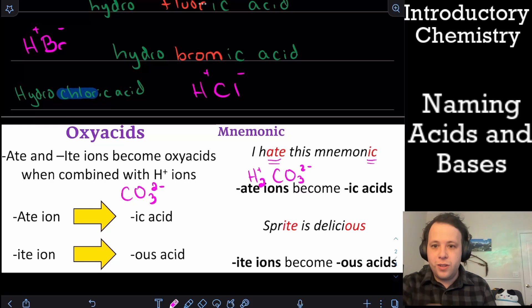So how would I name it? Well, if we have carbonate, we keep the element part of the name. So we just get rid of the ate ending. So in this case, it's going to be carbonic acid would be its name.